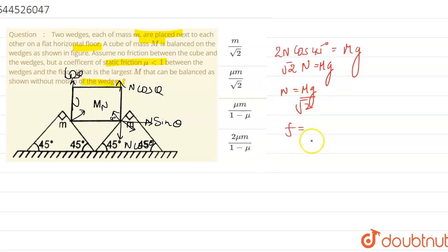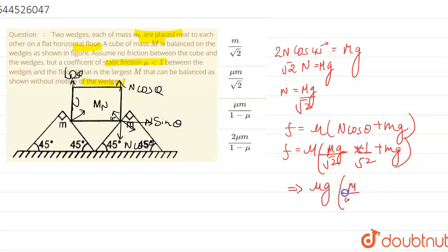f equals mu n cos theta plus mg. So f equals mu mg upon root 2 plus 1 multiplied by 1 by root 2 plus mg. This will come up to be mu g m by 2 plus m.